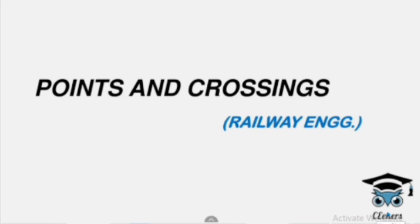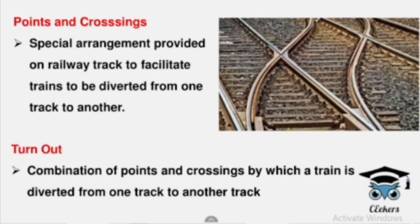What are the points and crossings? We have to track the railway track and each section in this figure. If you have a main track, you can use the train in a particular direction. The special arrangement provided on the railway track is to facilitate trains to be diverted from one track to another.